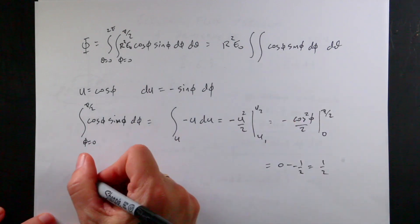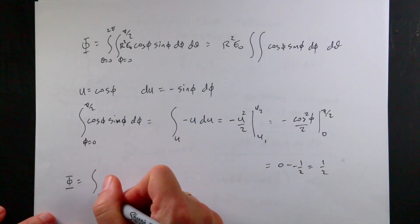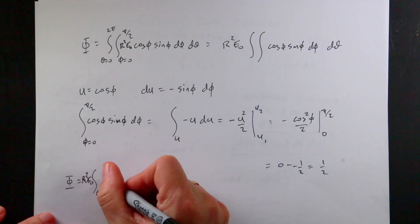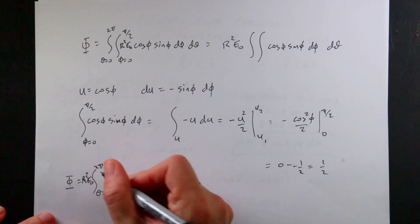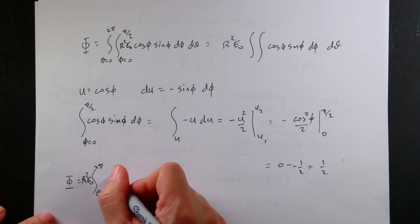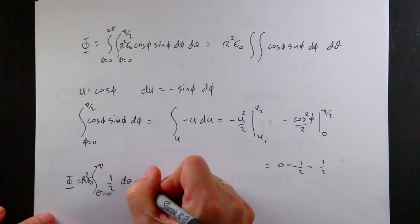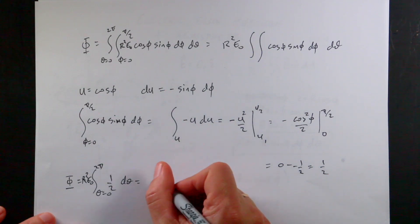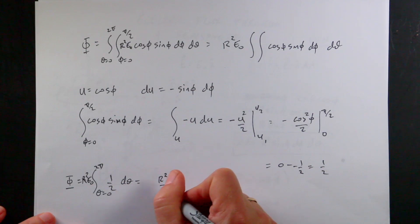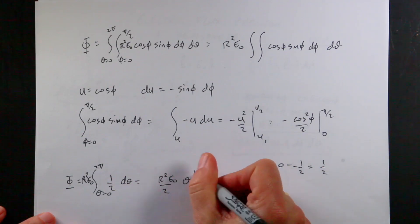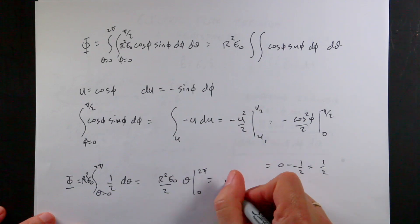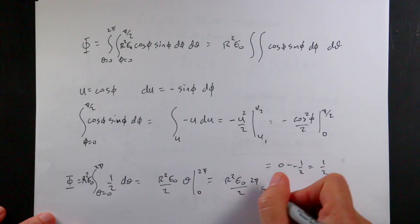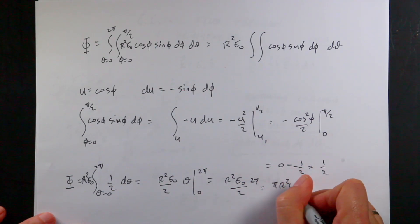Now I can put that back in the other integral. I get Φ equals R-squared e0 times the integral from θ = 0 to 2π of one-half dθ. That gives R-squared e0 over 2 times θ evaluated from 0 to 2π, which equals R-squared e0 times 2π over 2, or π R-squared e0.